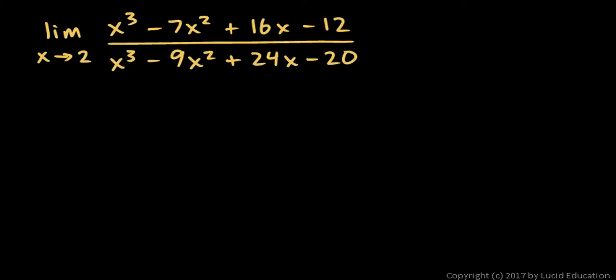In this one, the limit as X approaches 2 of one polynomial over another. We can't simply ignore the lower power terms in this case. That would be the case if X were approaching infinity. But in this case, X is approaching 2. So if we try to evaluate this at X equals 2, we end up getting 0 over 0.